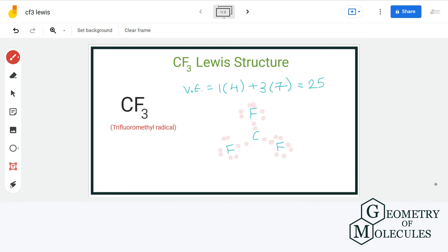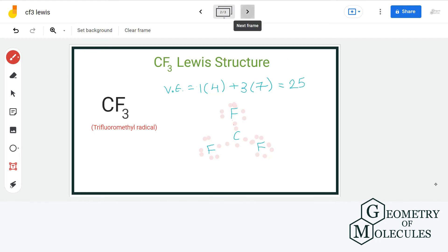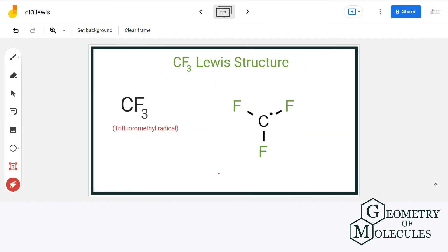Now, we are still left with one more electron that we will assign to carbon, and that's okay to do so because CF3 is a free radical and it can hold one unpaired electron. So, this is the final Lewis structure of CF3.